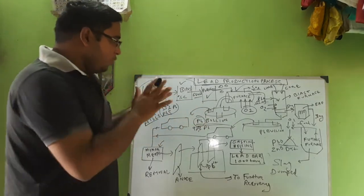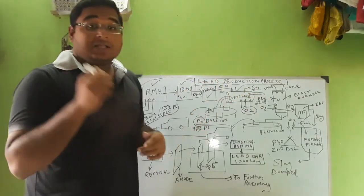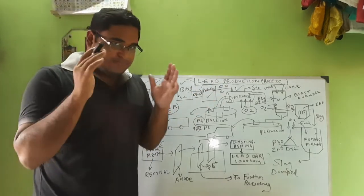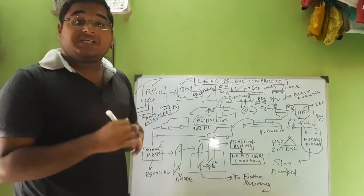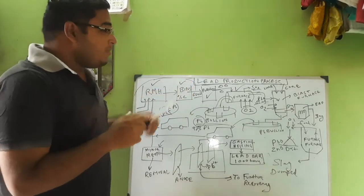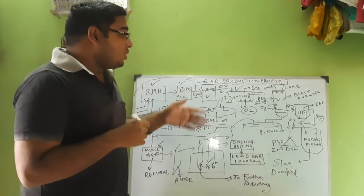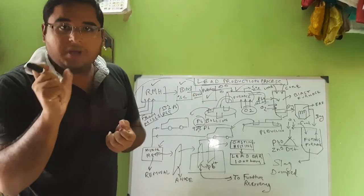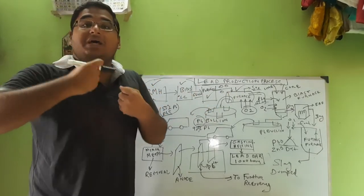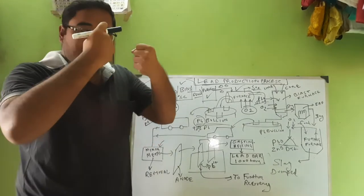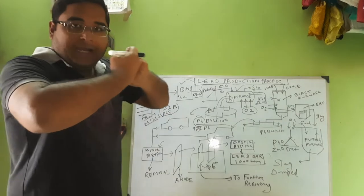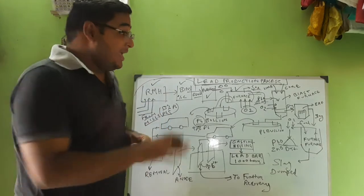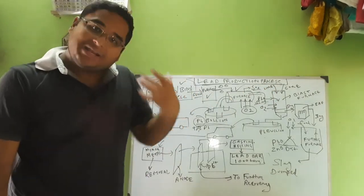The next section is the blast furnace, which collects the slag. The slag contains PbO. Coke and lime are fed from the top. Lime is fed to separate out PbO from PbO·SiO₂ — in the slag, PbO combines with the silicate ion SiO₂ to form PbO·SiO₂. When lime is fed, CaO reacts with SiO₂ to form CaSiO₃, freeing the PbO for reaction.